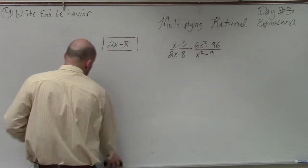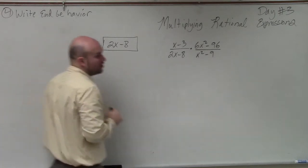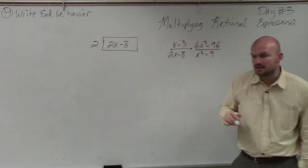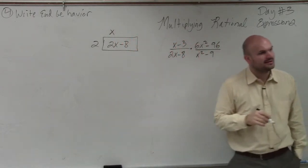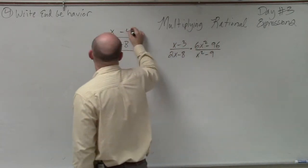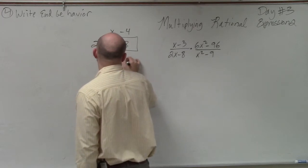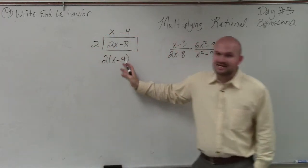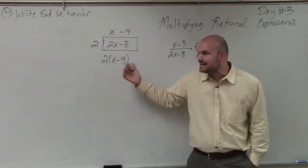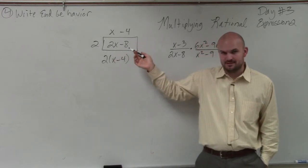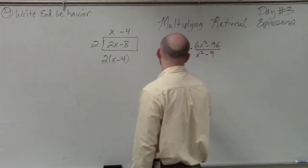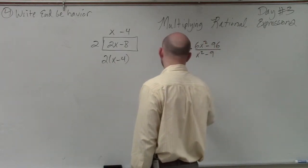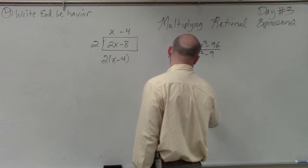And does anybody have a number you want me to try? 2. So if I chose 2, then 2 times what gives you 2x? X. And 2 times what gives you negative 8? Negative 4. So everybody would agree with me then, 2 times x minus 4 is the same thing as 2x minus 8. Correct. Except this is what we call our factored form. So I'm just going to rewrite the problem: x minus 3 over 2 times x minus 4.